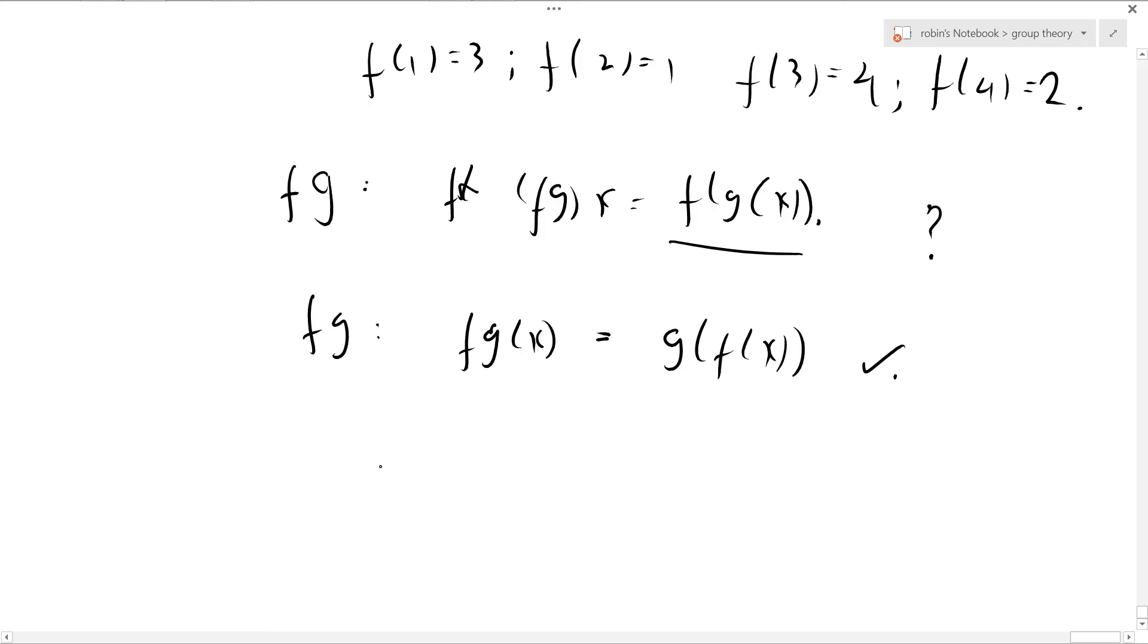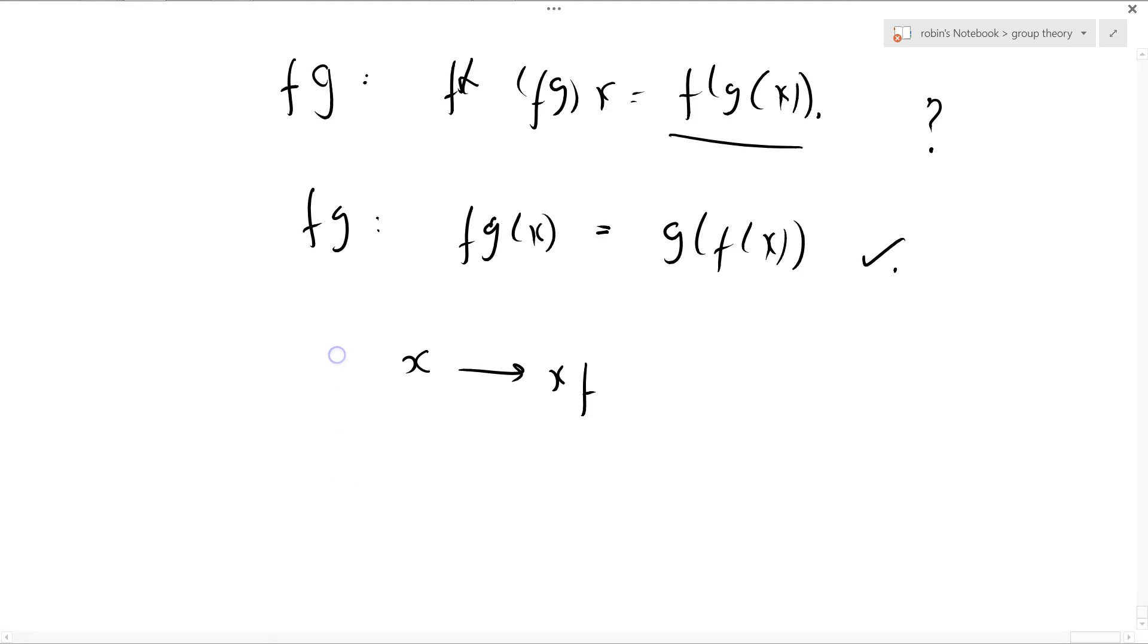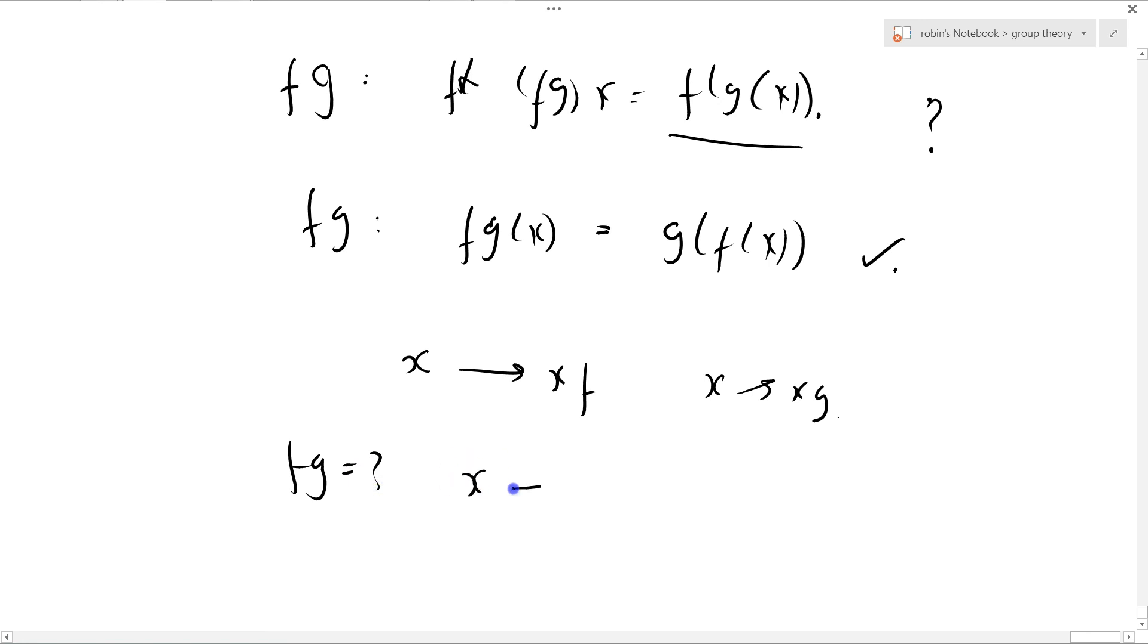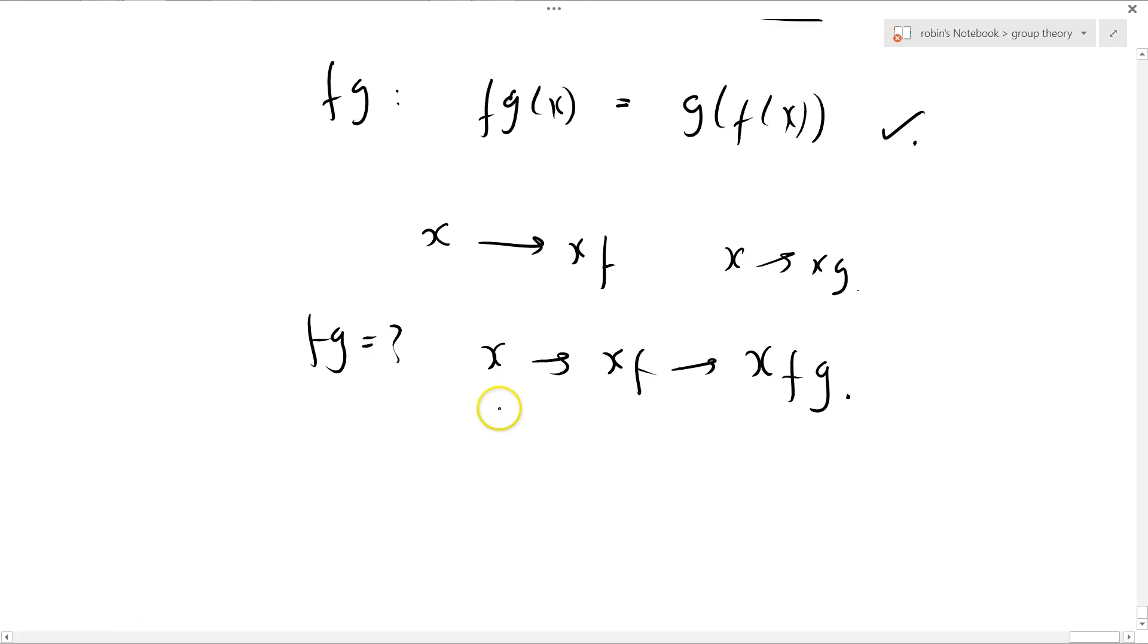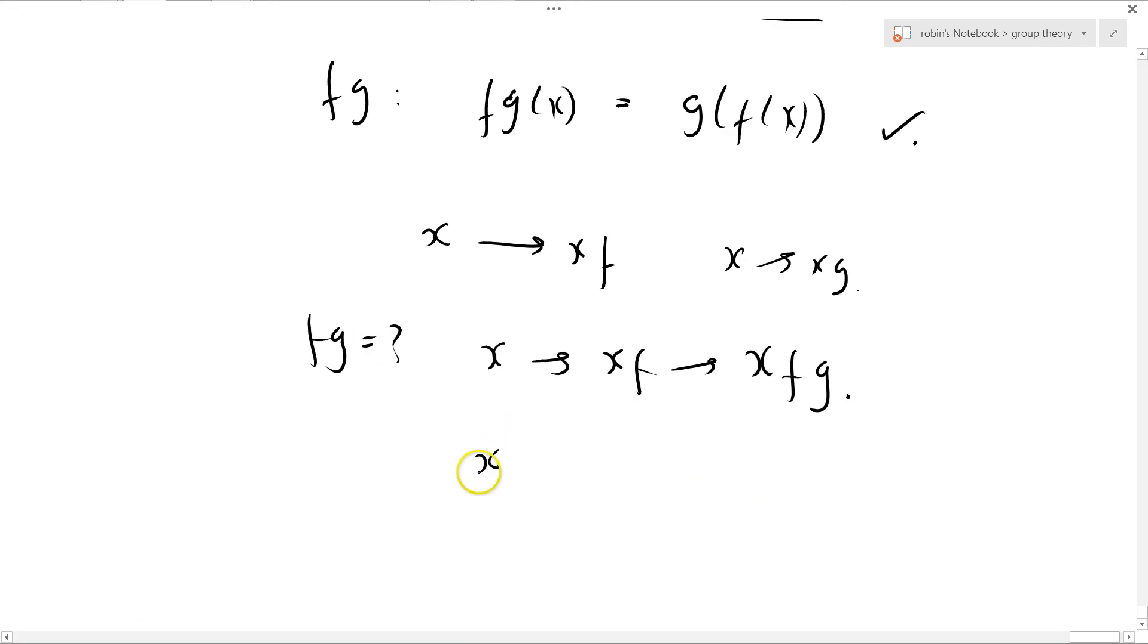The way to record it, if you want to write it, is this: x goes to xf, and so we're getting x and then we're doing something to it, which is f. And then we might say x goes to xg for another function. So x goes to xf, which then goes to xfg. And of course, we specify that x(fg) equals (xf)g. So it's like a right group action. Well, it is a right group action.